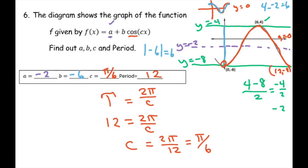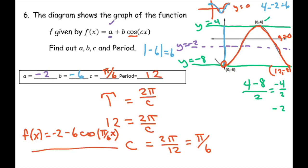If you want to plug these in, that would be F of X equals negative 2 minus 6 cosine of pi over 6 times X. And that would be your equation. The next ones I'm going to do faster because they're all the same — you try to do them first and then play the video to see if you got it right.